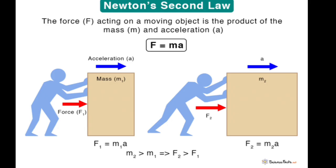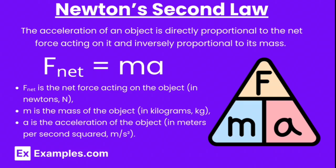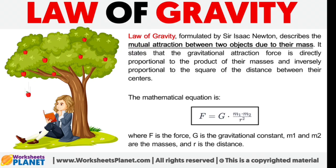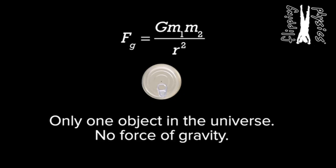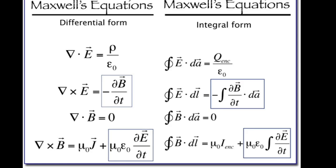Maxwell's equations describe the behavior of electric and magnetic fields, essential for understanding electromagnetism and modern communication technologies. The Schrödinger equation describes the behavior of subatomic particles. Thermodynamic laws govern heat transfer, energy conservation, and entropy.